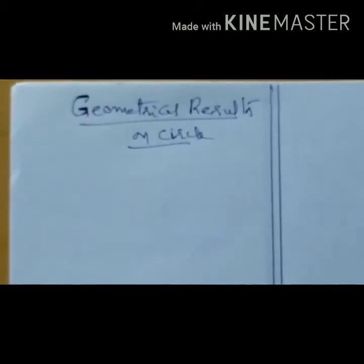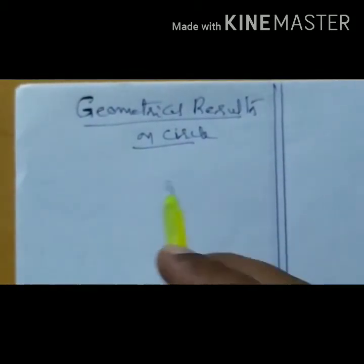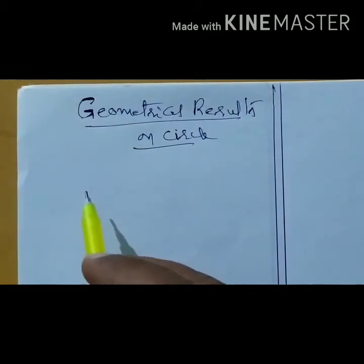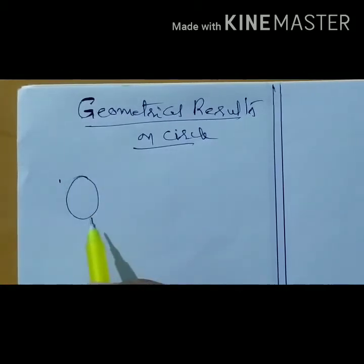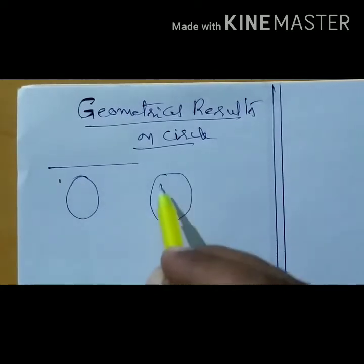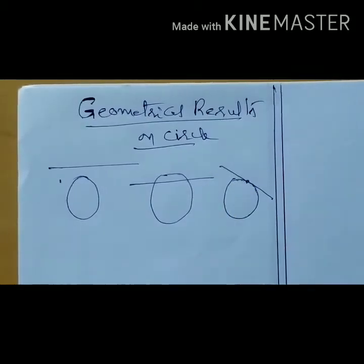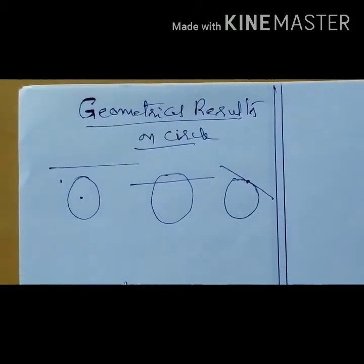Today we are going to discuss some important geometrical results of a circle. Suppose there is a circle and a line — how many ways can they exist in a plane? Circle S = 0 and line L = 0 can exist separately, or the circle and line may intersect each other, or the line touches the circle at one point. In all those cases, we have to relate them.